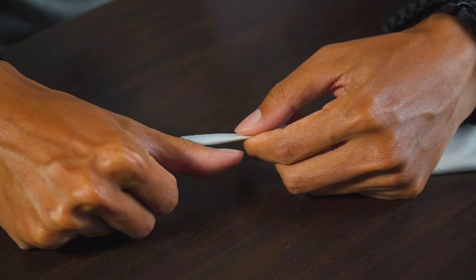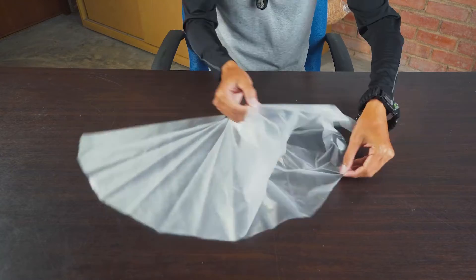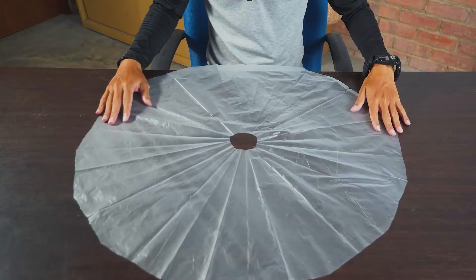Cut the narrow tip of your parachute about a thumb's length. Unfold and ta-da! A full circular parachute.